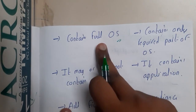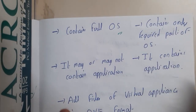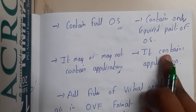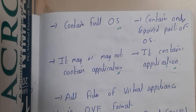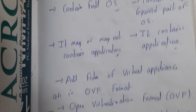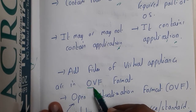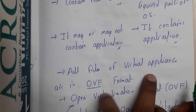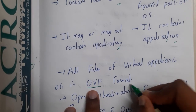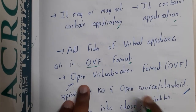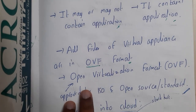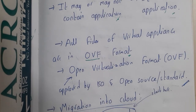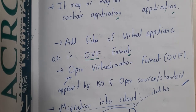A virtual machine contains a full OS, whereas a virtual appliance contains only part of the OS in itself. It should contain an application — that's the main purpose, to run the application. These virtual appliances use the OVF format files. OVF stands for Open Virtualization Format, which is approved by ISO and is an open source standard.